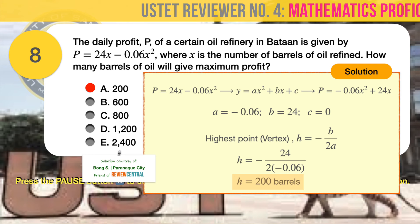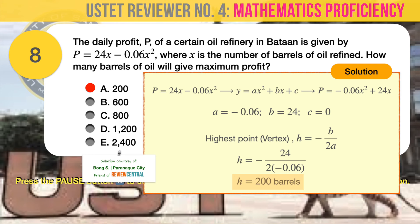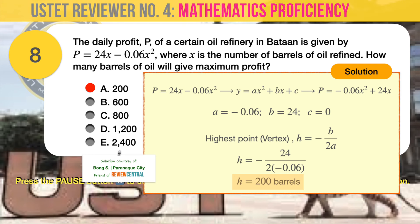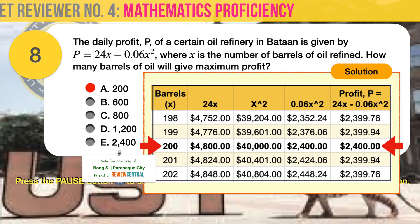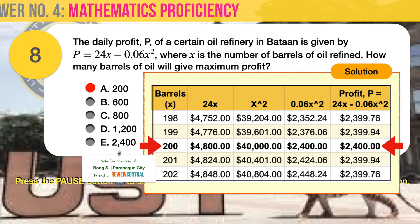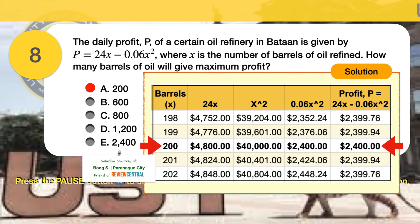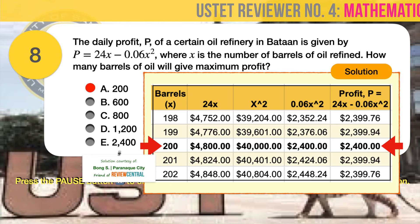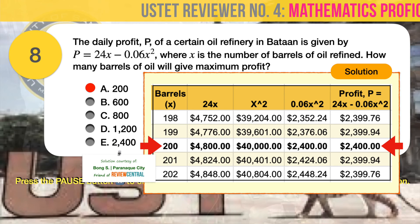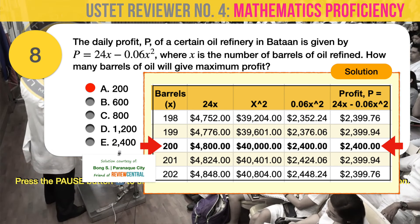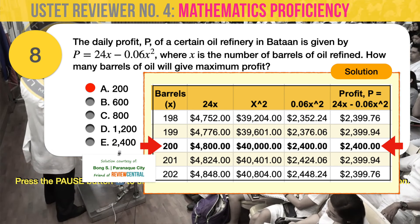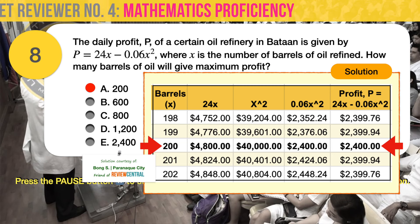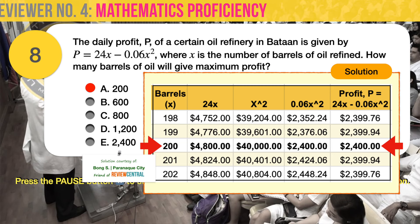To verify that 200 barrels gives maximum profit, we can plot x values in a table and compare with nearby values. Comparing the resulting profits from 198, 199, 200, 201, and 202 barrels, the table confirms that 200 barrels indeed results in the maximum profit.